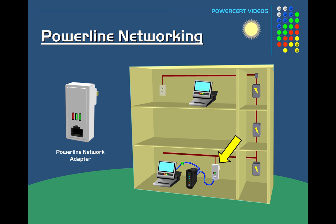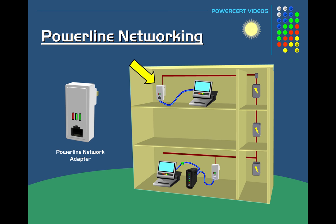Then you plug the other powerline adapter into the power outlet next to this computer up here, and connect an Ethernet cable from the network port of the computer into the powerline adapter's Ethernet port. Now Ethernet network data will use the building's existing electrical wiring to deliver networking data to the other powerline adapter so that the computer can access the internet.